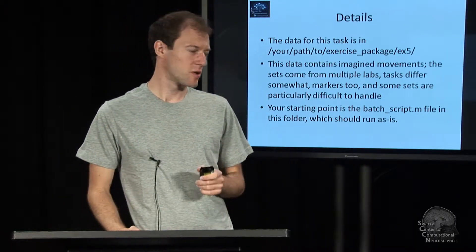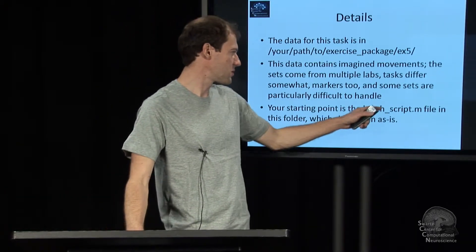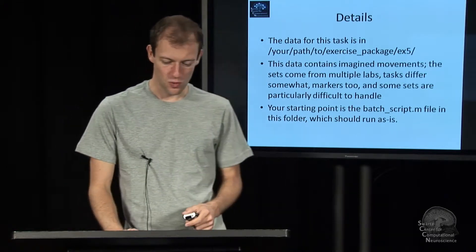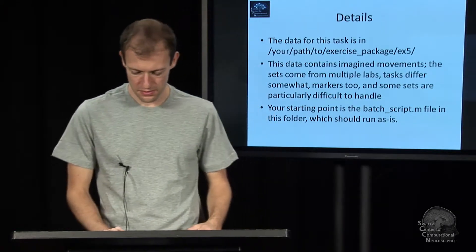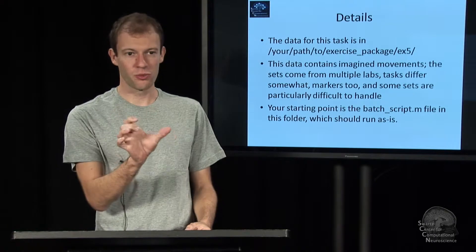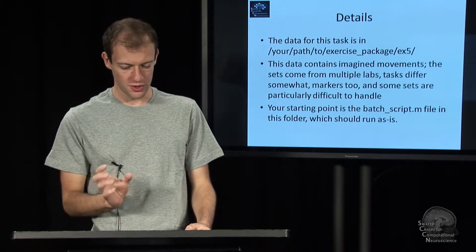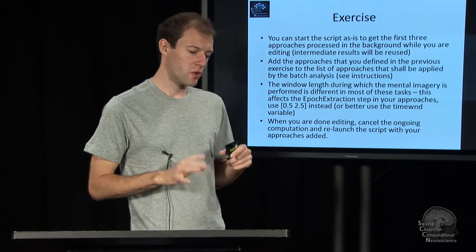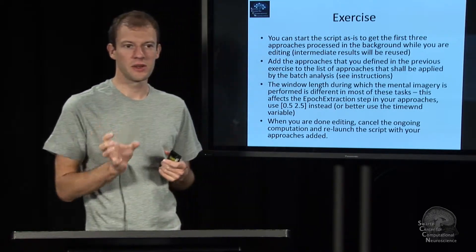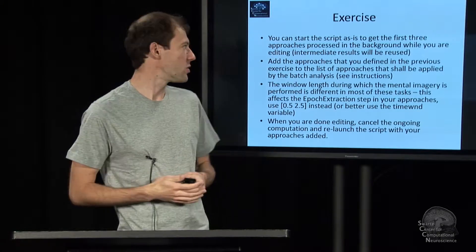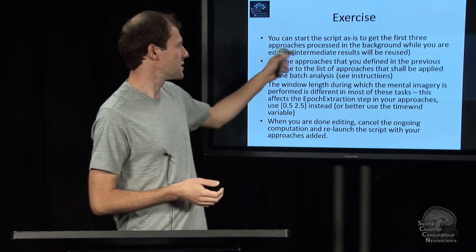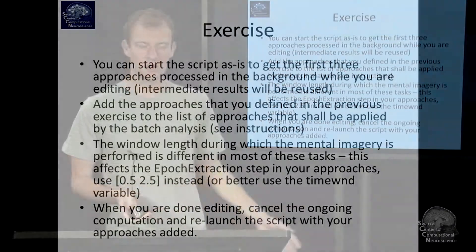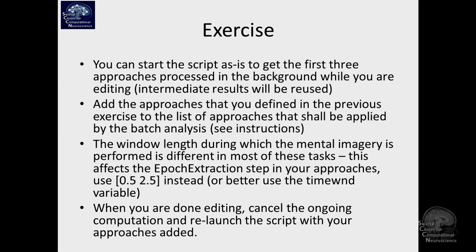And so to start analyzing this, you should find a script in this folder which is called batch_script.m. And this script should work out of the box because I've already predefined where the folders are in the script and what the right marker names are. And so because the script already runs and already runs an analysis for a default approach, you can already start it right away and start crunching some numbers. And the intermediate results that it produces will later be reused when you run the script again, perhaps with new approaches.